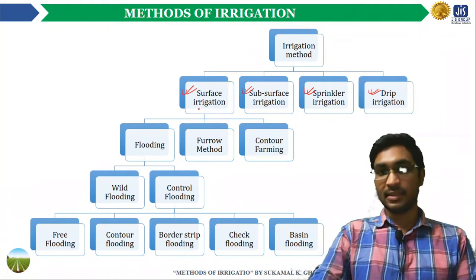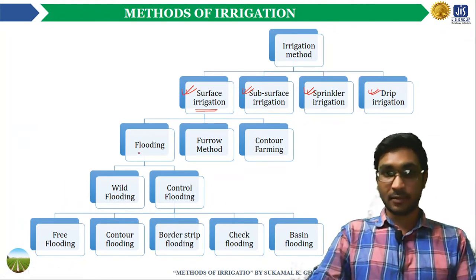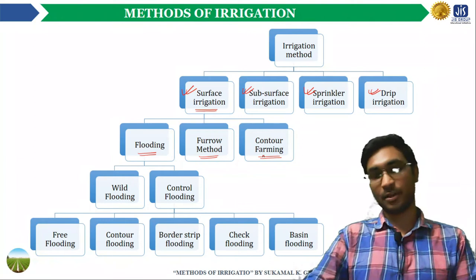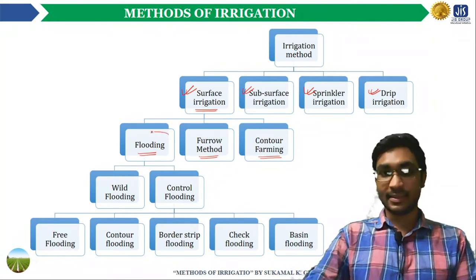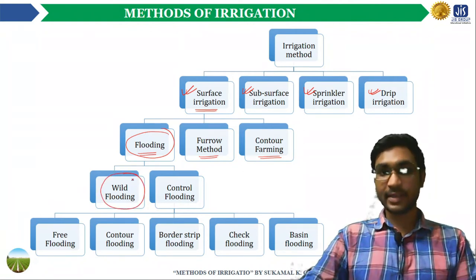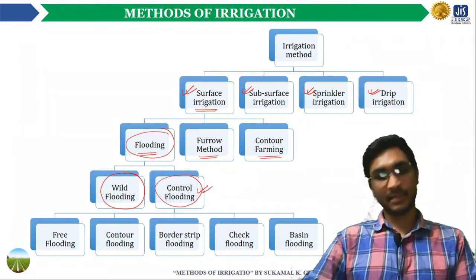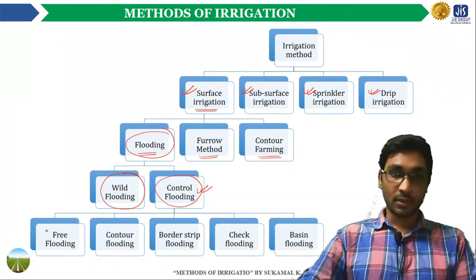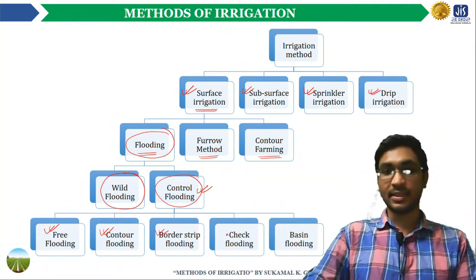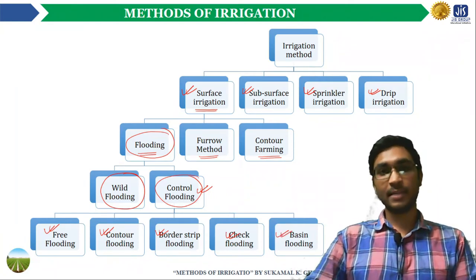Surface irrigation can be categorized into three methods: the flooding method, the furrow method, and the contour farming method. The flooding method may be classified into two categories: wild flooding and controlled flooding. Further, the controlled flooding method may be subdivided into free flooding, contour flooding, border strip flooding, check flooding, and basin or ring basin method of irrigation.